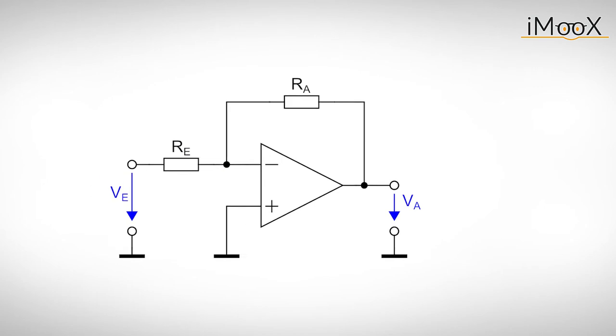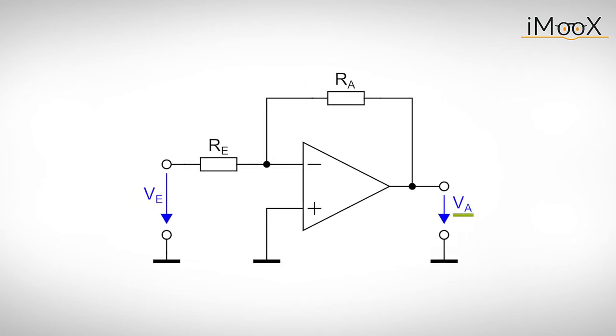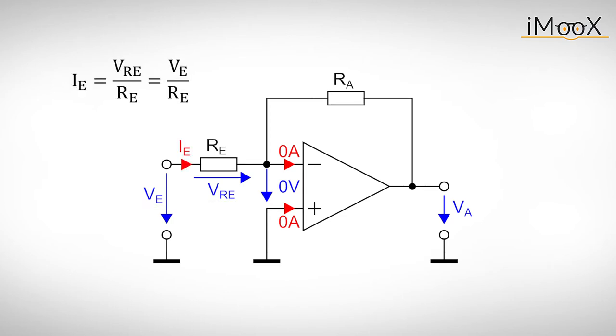To determine the output voltage Va as a function of the input voltage Ve we apply the rules we have learned. This means Vd is 0V and I plus and I minus are 0A. As the non-inverting input is connected to ground the potential at the inverting input is 0V. Thus the voltage drop over Re equals the input voltage Ve, and we can calculate the current Ie.